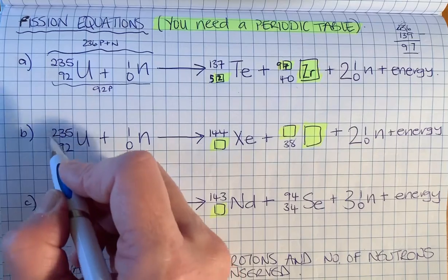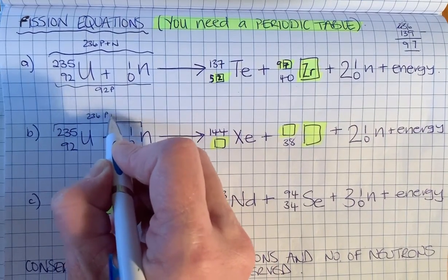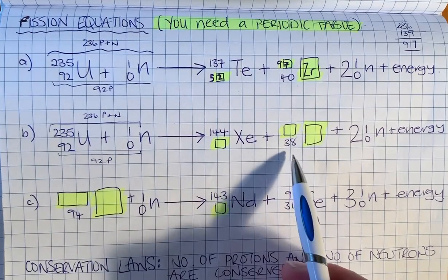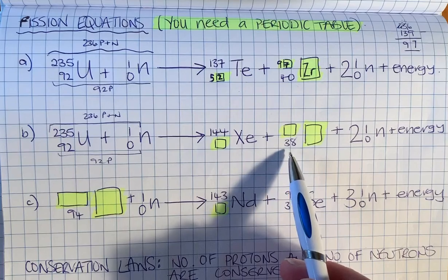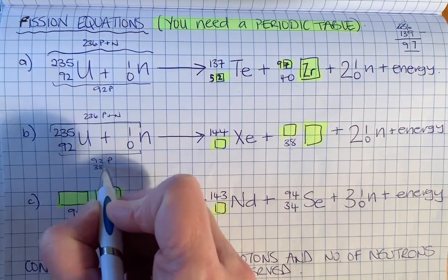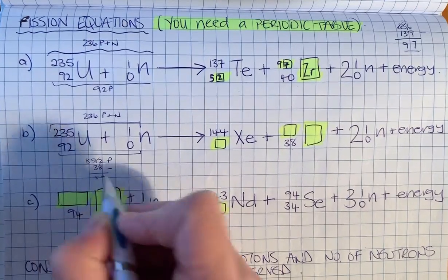Again, we have the same in B. We've got 236 protons plus neutrons and 92 protons. We've got 38 protons here, so we need to do 92 minus 38, which is 54.